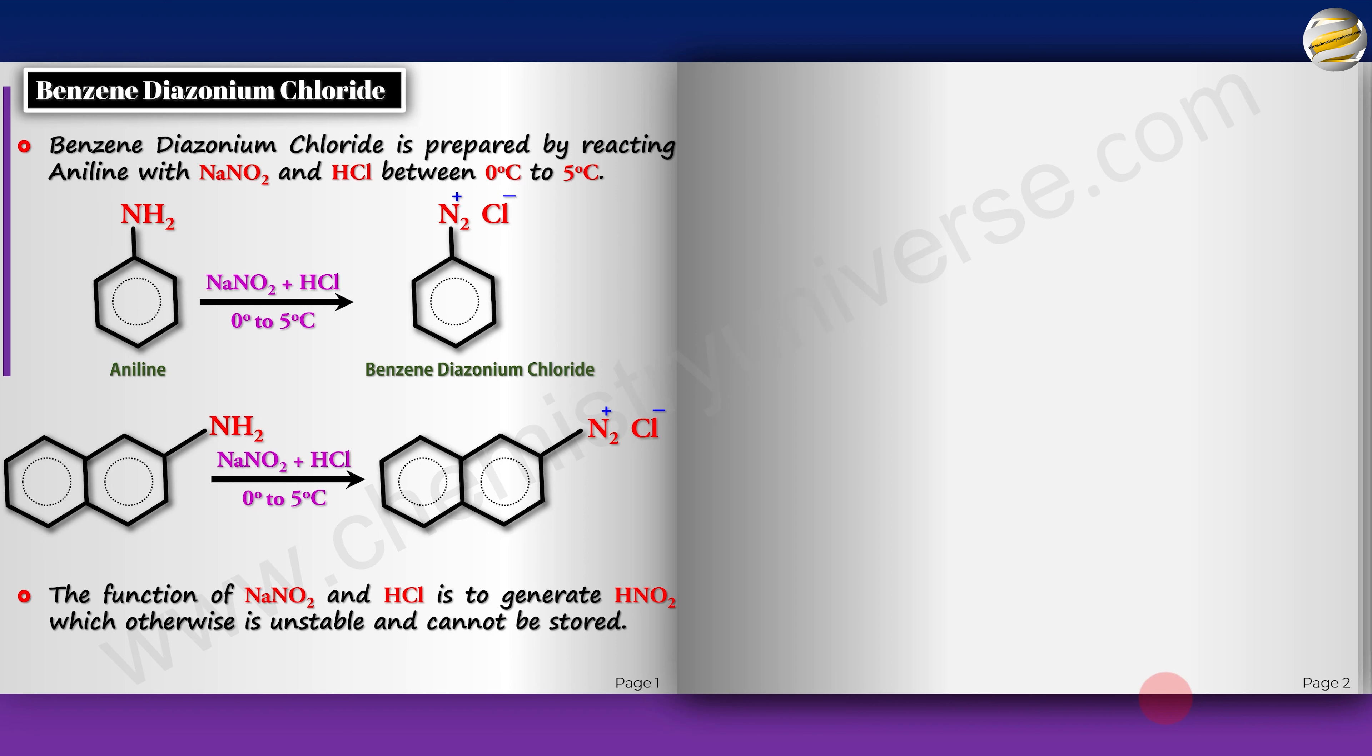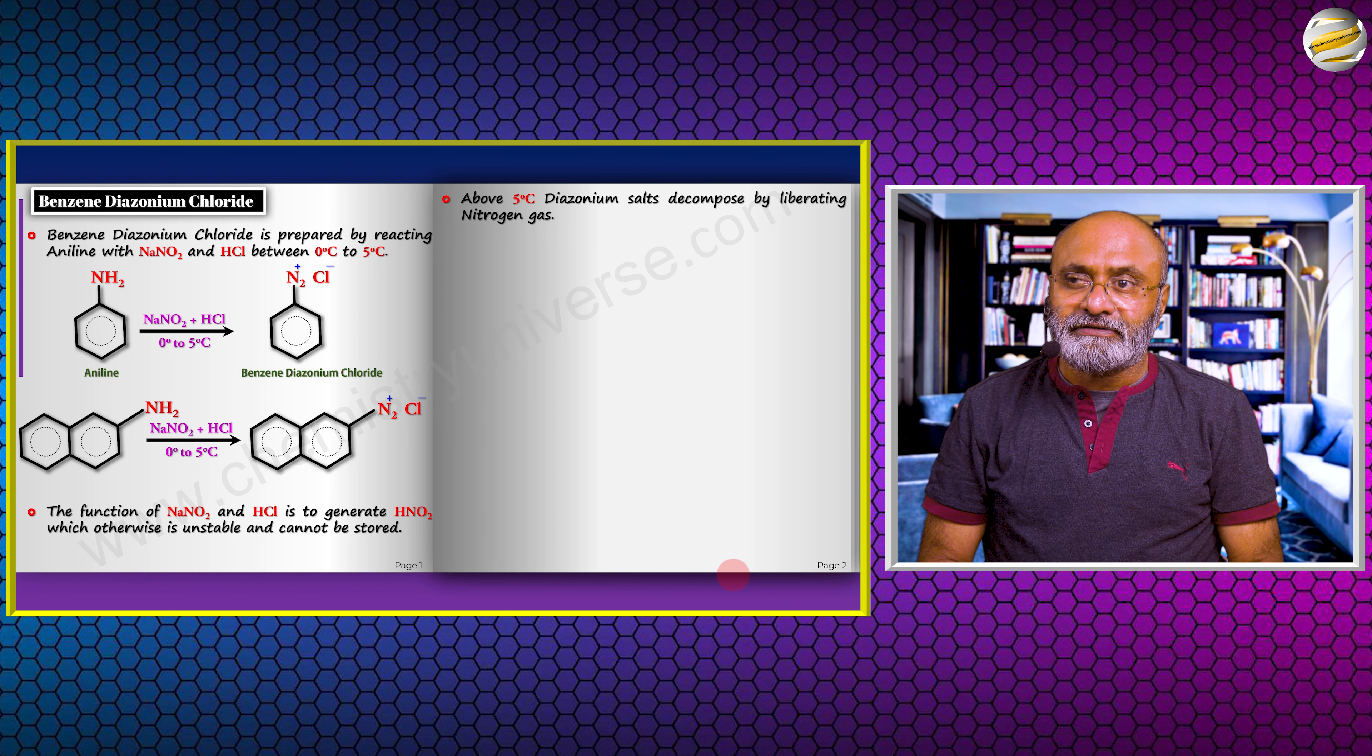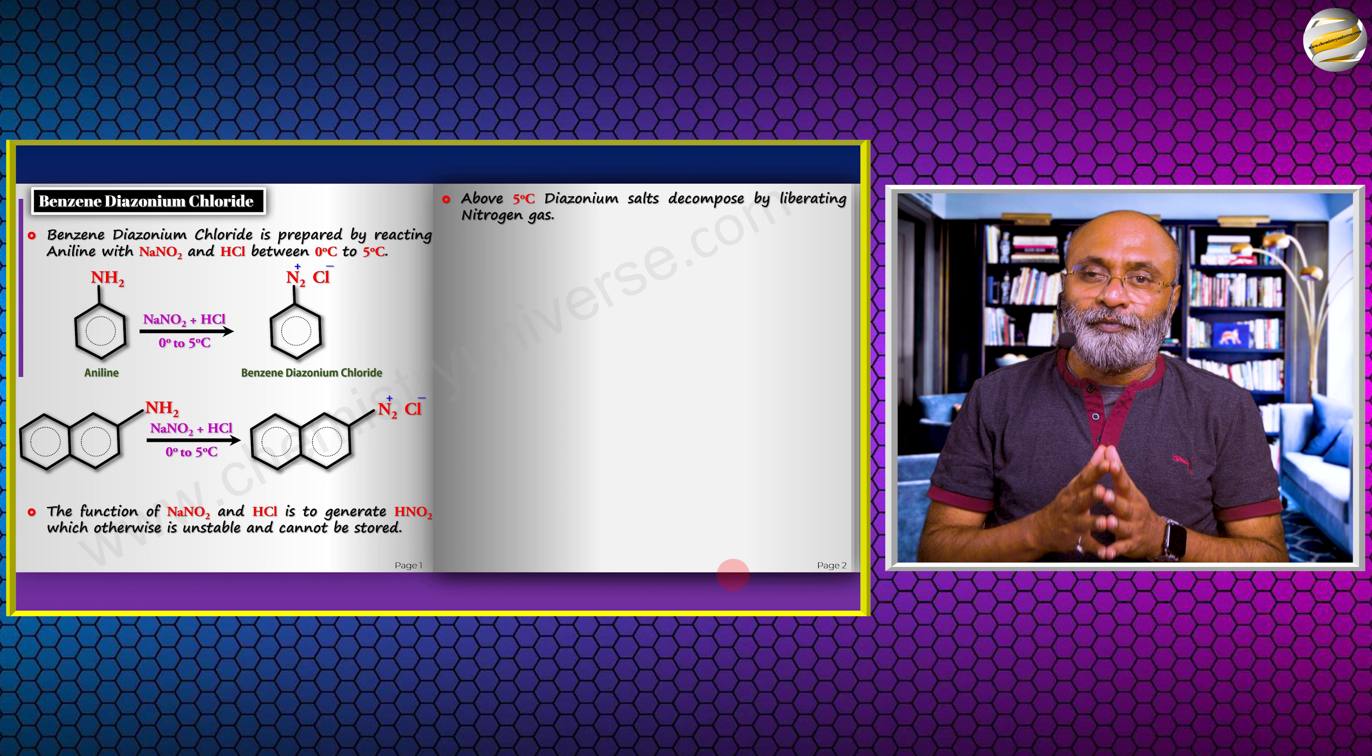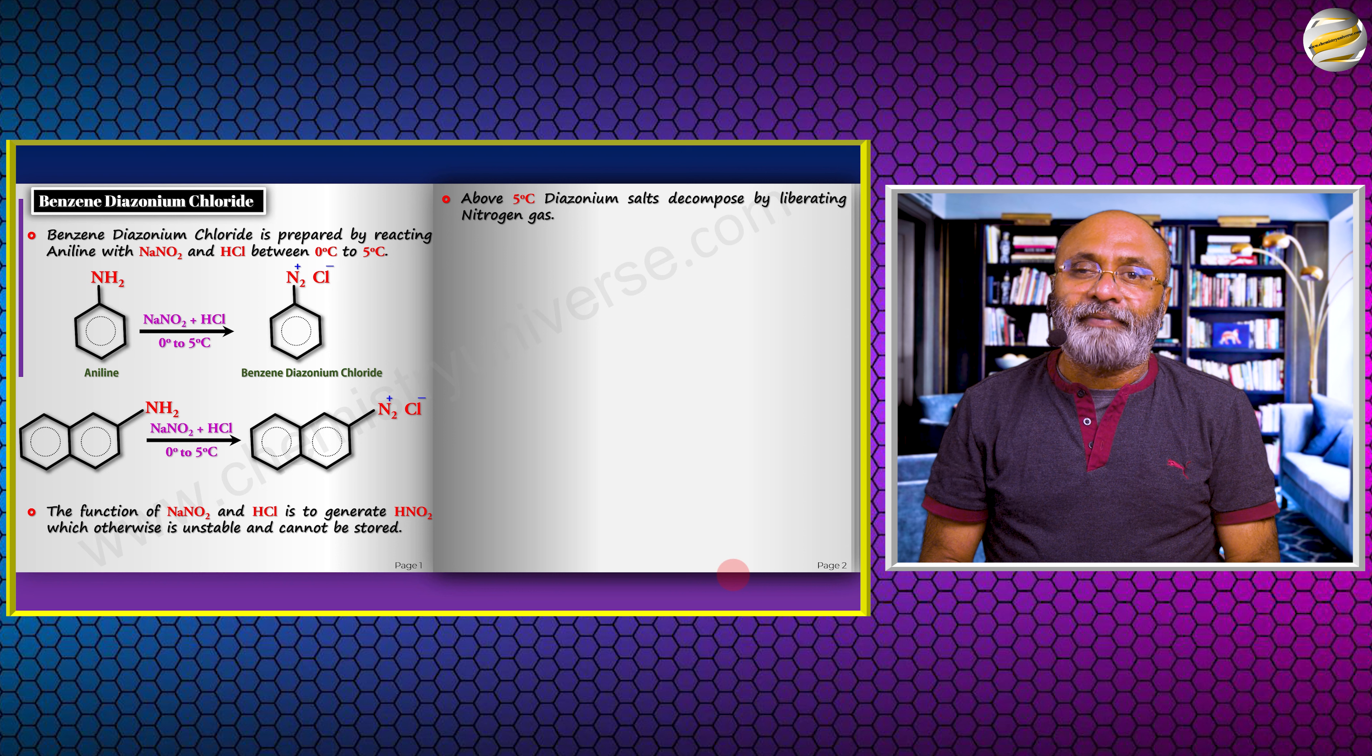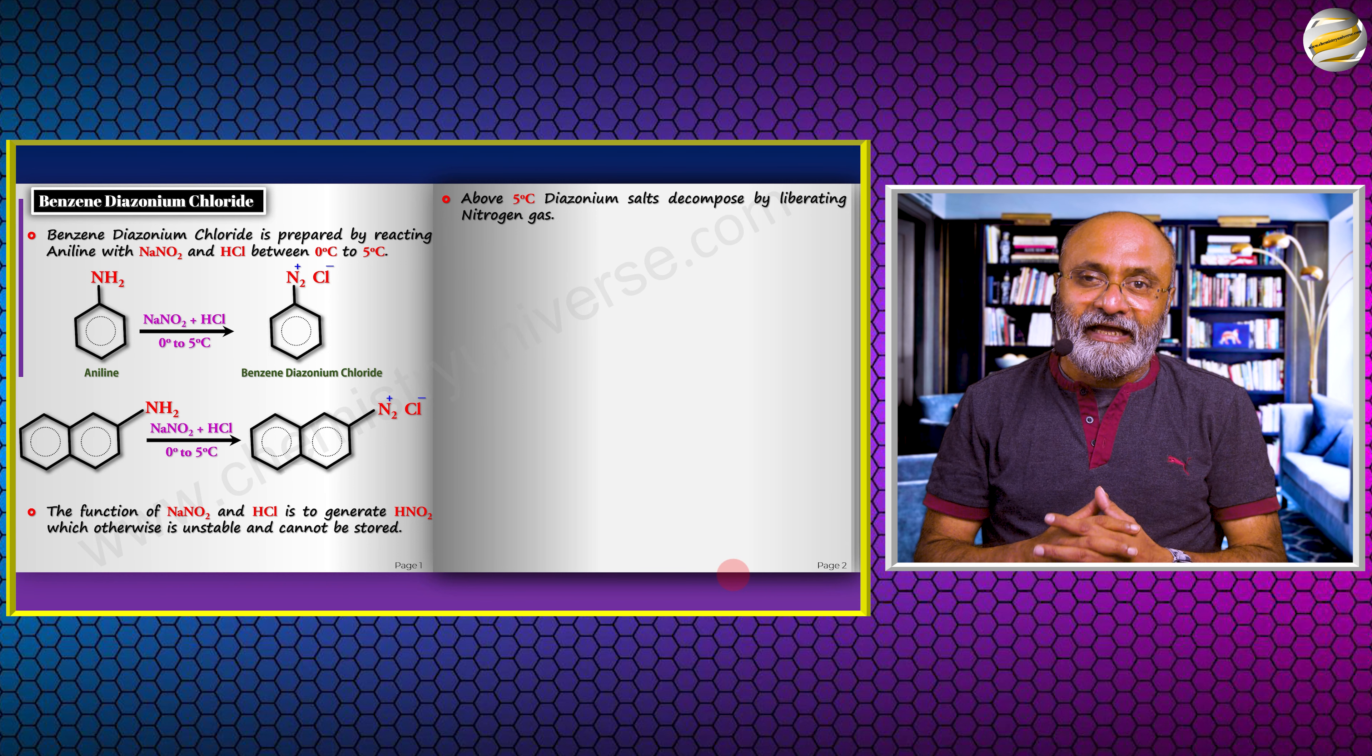Above 5 degrees Celsius, the diazonium salts decompose by liberating nitrogen gas. The diazonium salts of aliphatic molecules are extremely unstable because of the very good leaving group of N2, and therefore they are generally not even prepared. If you try to prepare an aliphatic diazonium salt, water would attack the carbon evolving nitrogen, and you will get alcohol instead. But in the case of benzene diazonium, they are stable till 5 degrees, so whatever reactions you want to do, you can do it below 5 degrees.